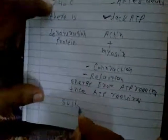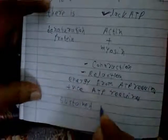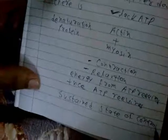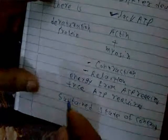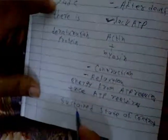So there is a sustained state of contraction that occurs after death — that is known as rigor mortis. Rigor mortis is after death, lack of ATP. The presence of ATP is required to dislodge or remove the bridge between actin and myosin. Because the bridge is not removed, they remain in a sustained state of contraction — that is rigor mortis.